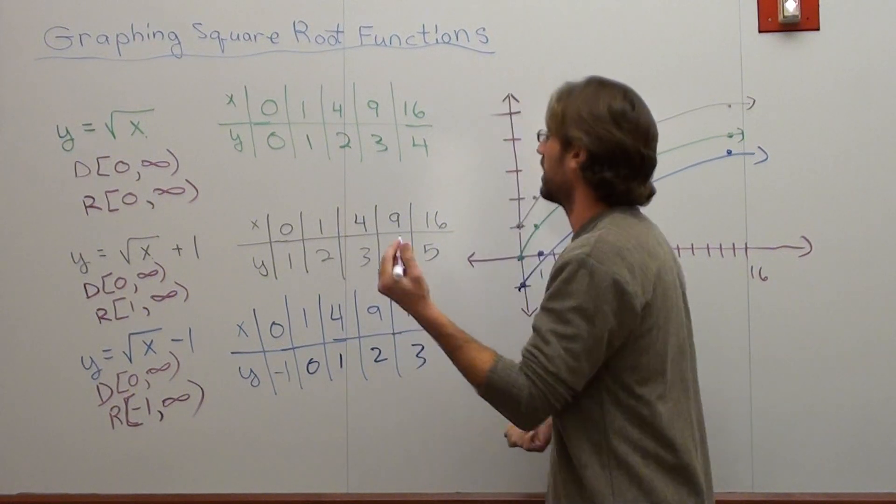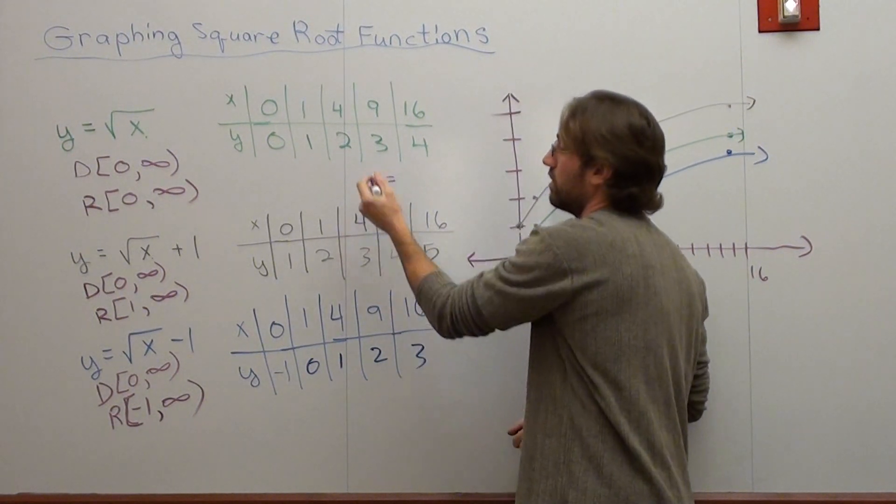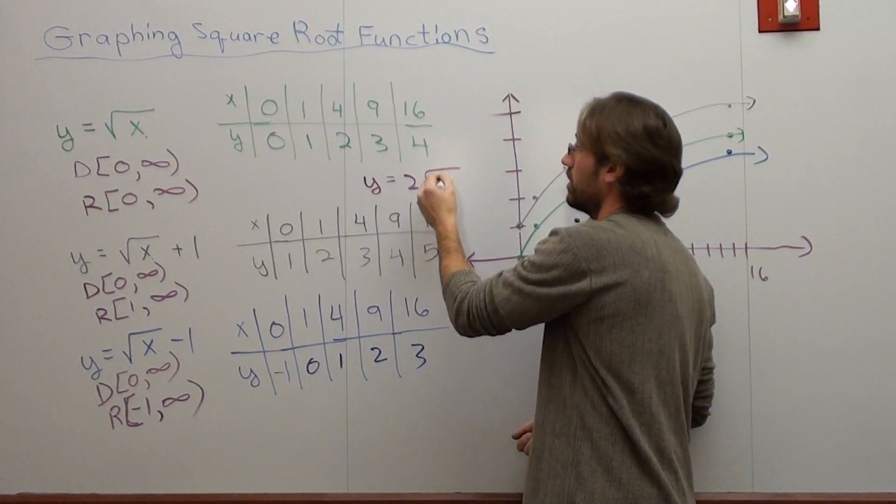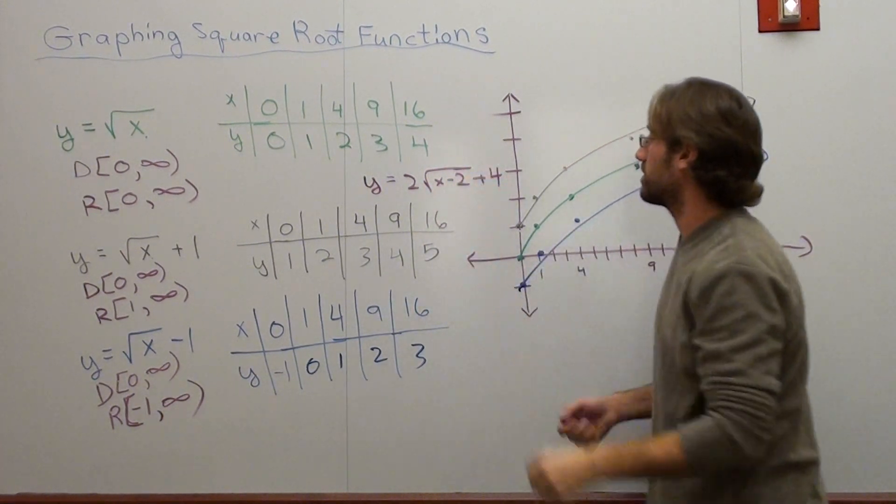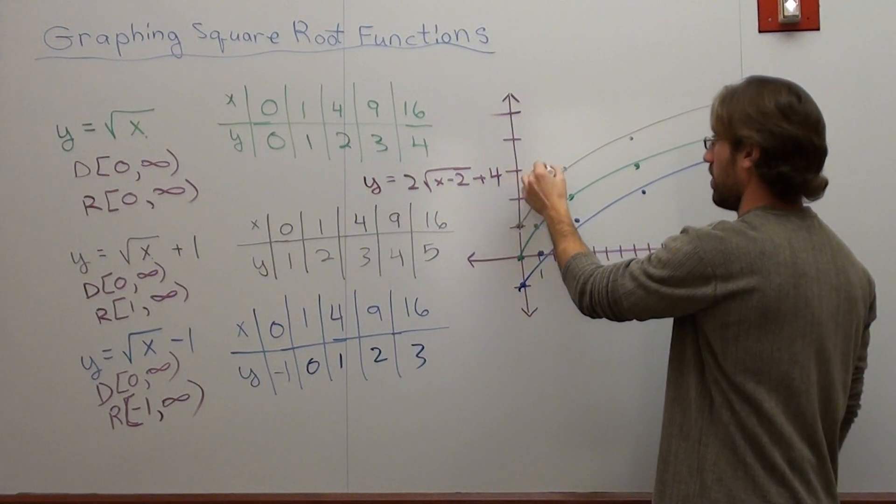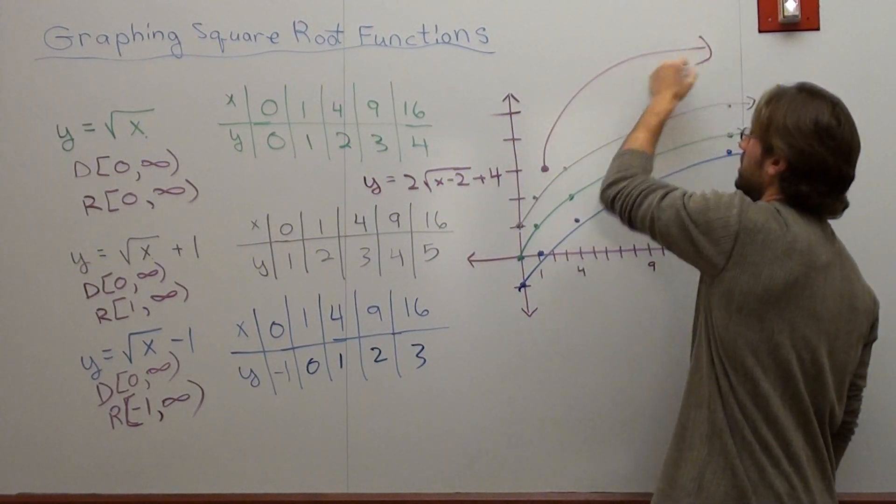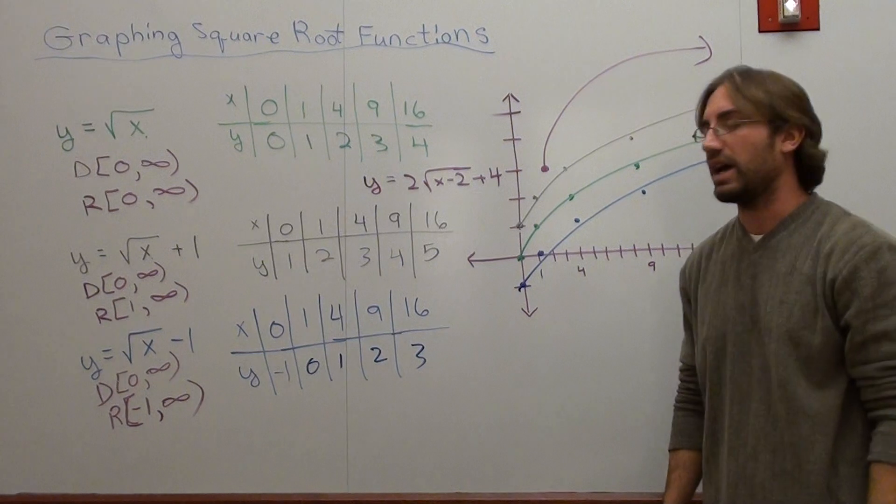If I saw a function like that, let's say y equals 2 square root x minus 2 plus 4, I could say, oh, okay, it's right here and right here, so it starts there and it goes up fast. It's as simple as that.